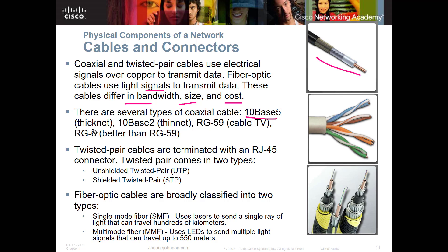There are different types of coax cables: 10BASE-5, called thick net, and 10BASE-2, called thin net — you won't see those much anymore but you still need to know them for the A+ exam. RG59 is typically used for cable TV coming into your house; RG6 is a higher standard than RG59. For Ethernet or twisted pair cabling, those are terminated with an RJ45 connection. RJ11s are used for the plain old telephone system (POTS).